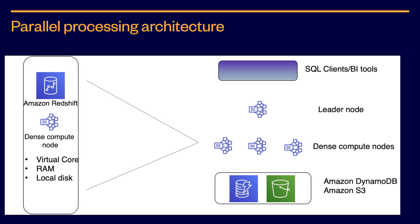Amazon Redshift contains two types of nodes. The leader node manages communication with client programs and all communication with compute nodes. Compute nodes parse and develop plans to carry out database operations — specifically the steps needed to obtain results for complex queries. The leader node compiles code for individual elements of the plan and assigns the code to individual compute nodes. Compute nodes run the compiled code and send intermediate results back to the leader node for final aggregation.